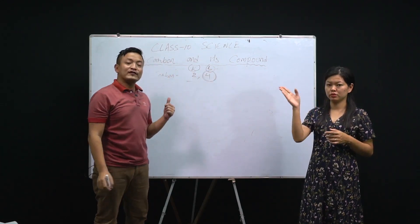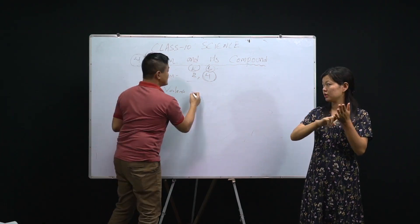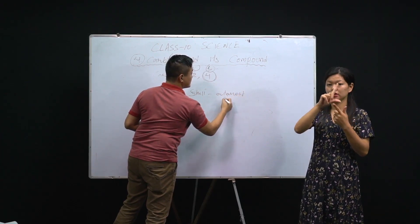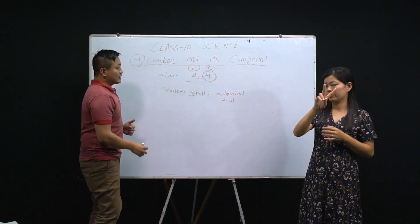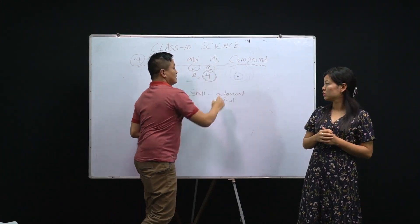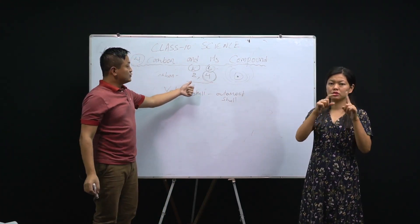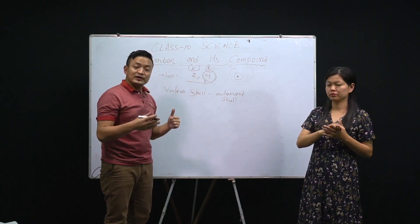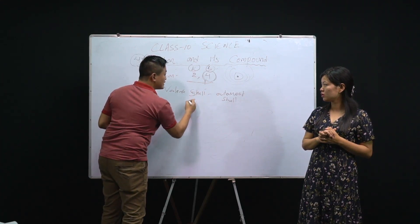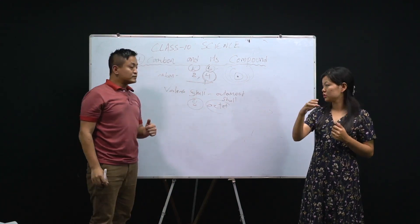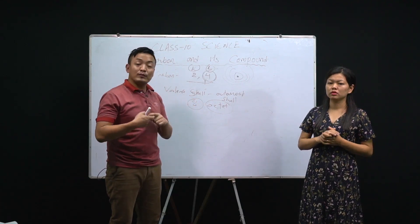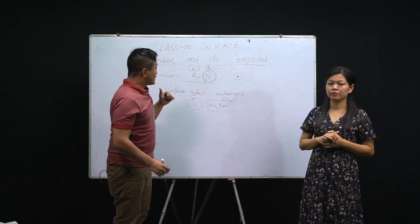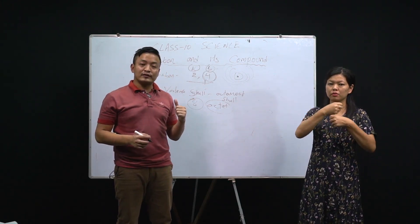Carbon has four valence electrons. Valence means the outermost shell. Now, carbon's electronic configuration is 2,4, so the outermost shell has four electrons. To complete the goal it should be eight - this is known as the octet. Whenever they form a bond, they have to fulfill this octet rule.